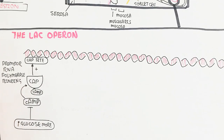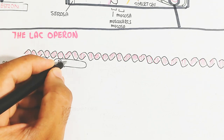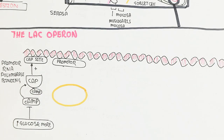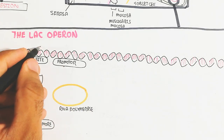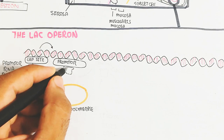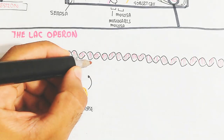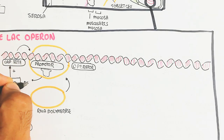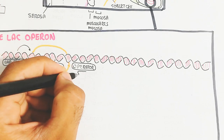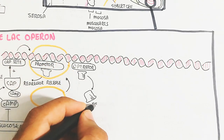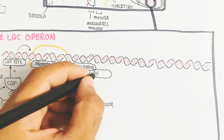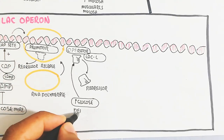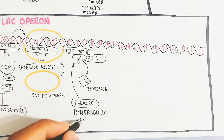When lactose is high and glucose is absent, the promoter region releases the repressor. The repressor, when present, inhibits transcription of lactose-digesting enzyme genes. With the repressor released, RNA polymerase can bind to the promoter and proceed to the operator. If glucose is high, the repressor binds the operator and prevents transcription; if lactose is high and glucose is low, the repressor is released, allowing transcription.